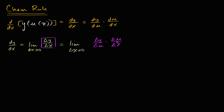Change in y over change in u times change in u over change in x — and you can see these are just going to be numbers here. So our change in u would cancel, and you'd be left with change in y over change in x, which is exactly what we had. So nothing earth-shattering just yet. But what's this going to be equal to? Well, the limit of the product is the same thing as the product of the limits. So this is going to be the same thing as the limit as delta x approaches zero.